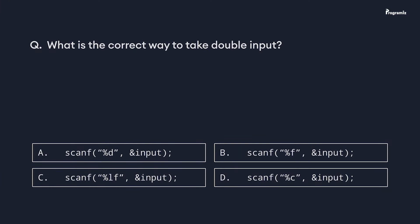Now I want you to write a program to take integer and float input from the user — go ahead and comment your program. We are at the end of this video. It's time for the programming quiz: what is the correct way to take double input? Comment your answer below. You can find all these programs in our GitHub repository — the link is in the video description. See you in the next video. Happy programming!